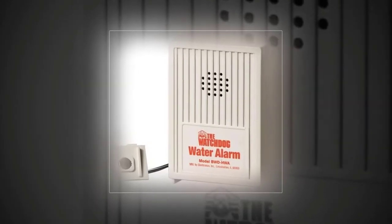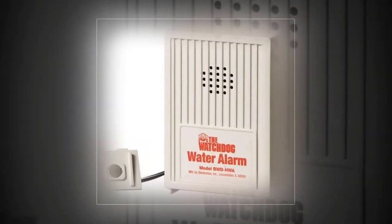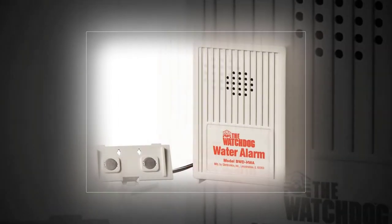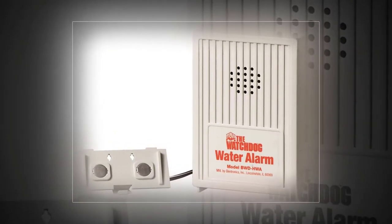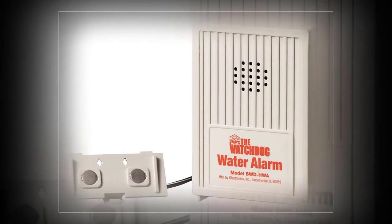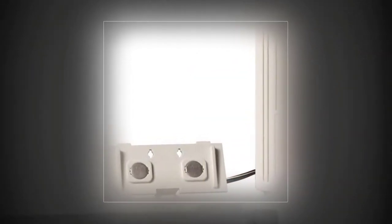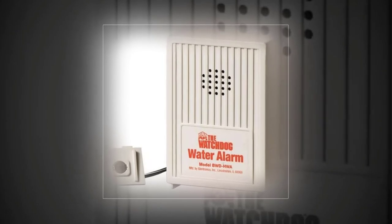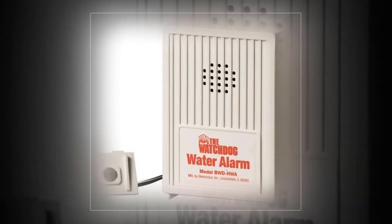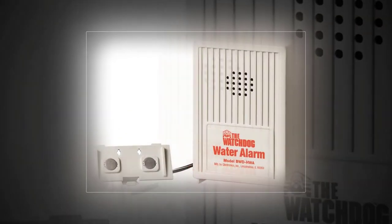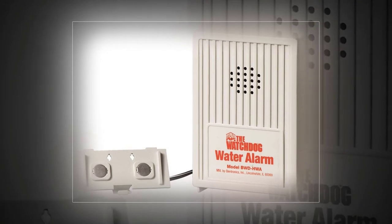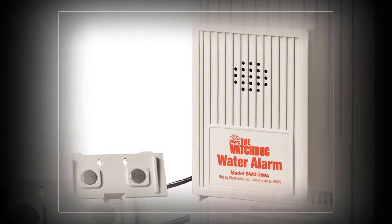Glentronics Incorporated BWDHWA detects as little as 1/32 inches of water to offer an effective early warning system. Solid state circuitry is extremely sensitive and reliable. Loud 110 dB alarm can be heard throughout the house. Sensor has a 6-foot wire so it can be extended into a sump pit or mounted on a wall. Accommodates the addition of more than 100 feet of wire, additional 24-gauge wire not included.